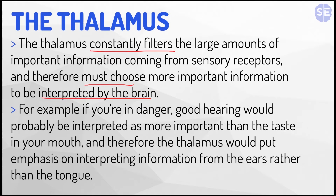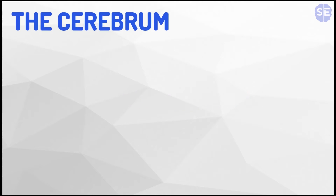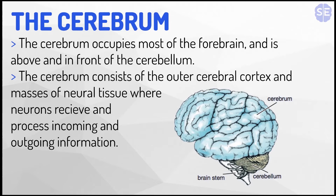Now I'll explain the last part of the forebrain: the cerebrum. The cerebrum occupies most of the forebrain and is above and in front of the cerebellum, which is demonstrated in this diagram here. The cerebrum consists of the outer cerebral cortex and masses of neural tissue where neurons receive and process incoming and outgoing information.